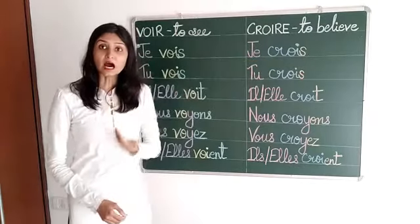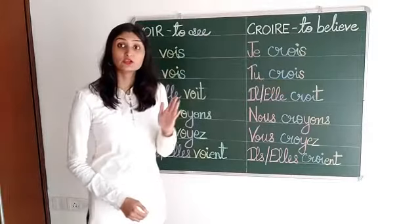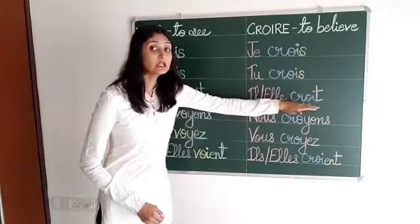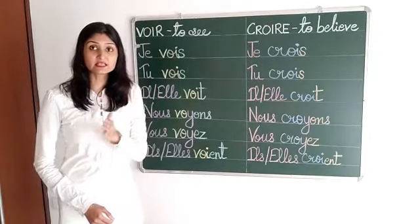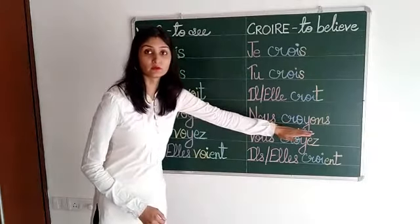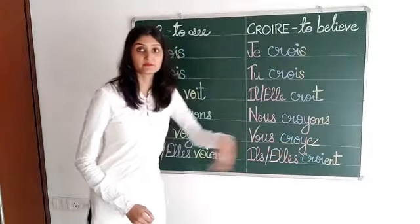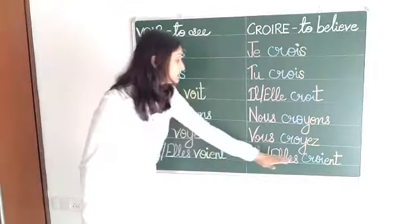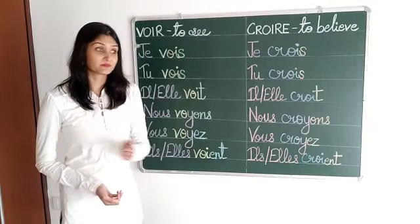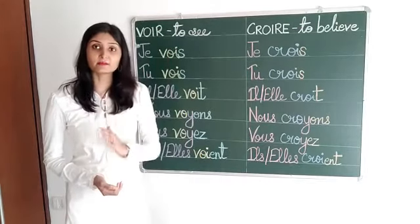Then comes the next verb. Je crois — I believe. Tu crois — you believe. Il croit, Elle croit — he believes, she believes. Nous croyons — we believe. Vous croyez — you believe. Ils croient, Elles croient — they believe. Il croit for masculine and Elle croit for feminine.